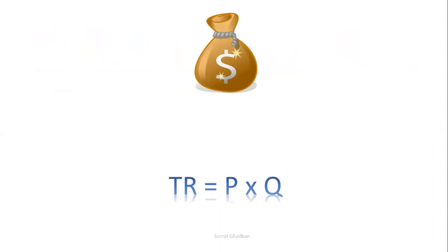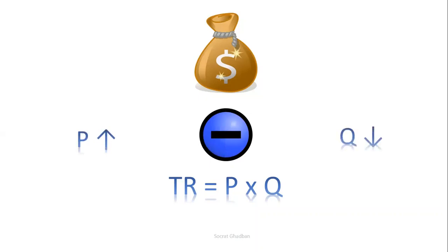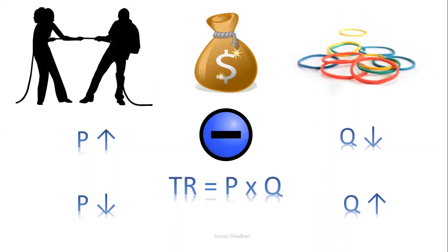We know that the law of demand states that there is a negative relationship between price and quantity. So whenever the price increases, the quantity demanded decreases, and whenever the price decreases, the quantity demanded increases. As you can see in the formula of total revenue, price and quantity are moving in opposite directions, so we cannot know how total revenue will increase or decrease — and this is where the price elasticity of demand steps in.